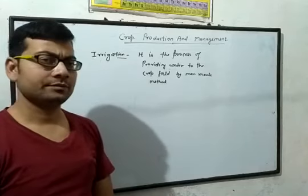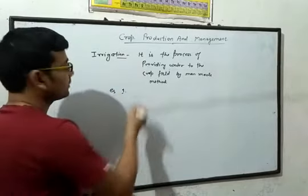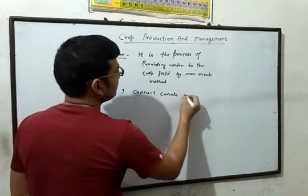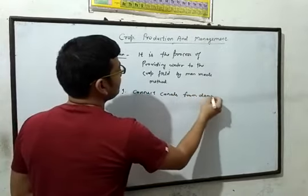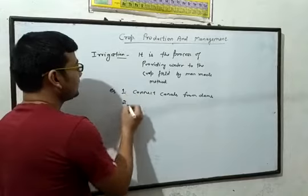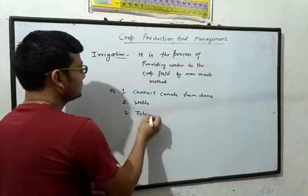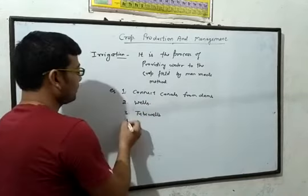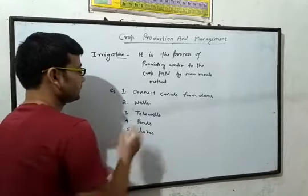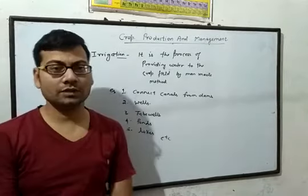Irrigation is time-critical. The sources used for irrigation include: first, canals connected from dams; second, wells; third, tube wells; fourth, ponds; lakes; and so on. Various processes occur for the irrigation of the crop field.